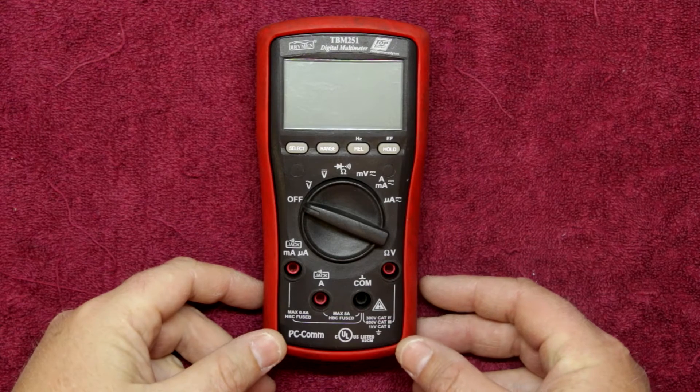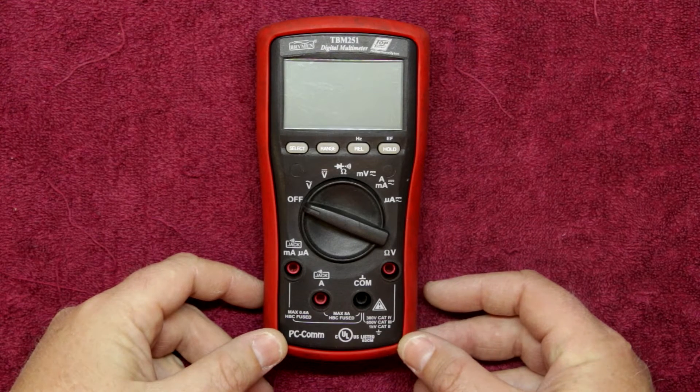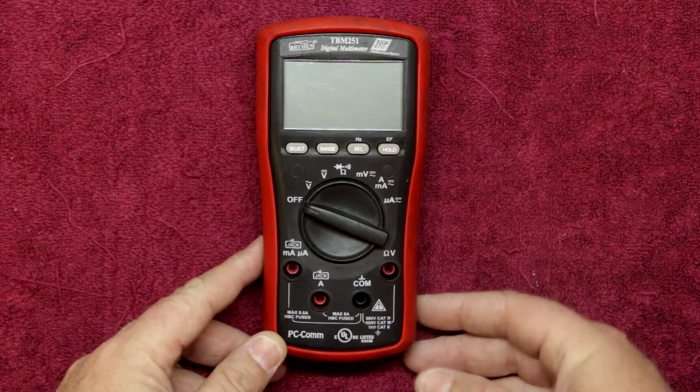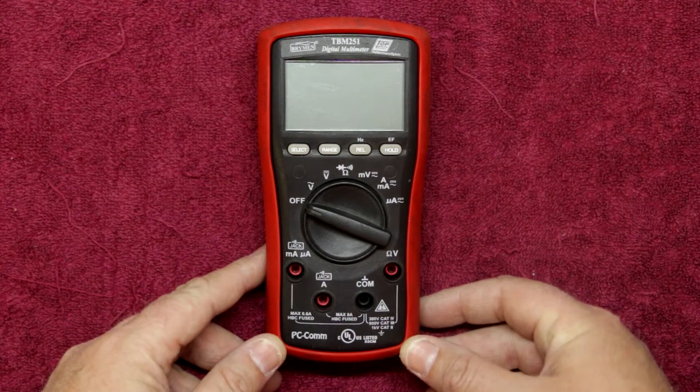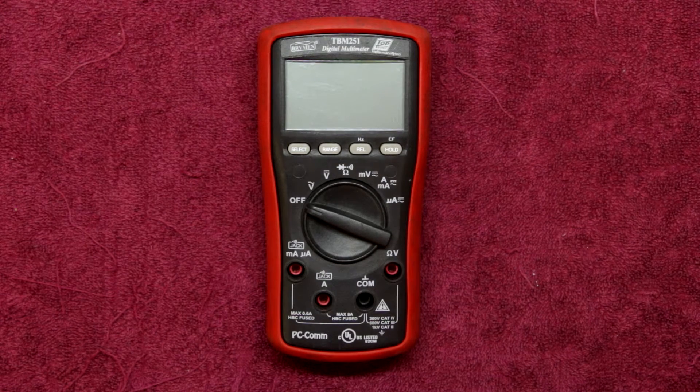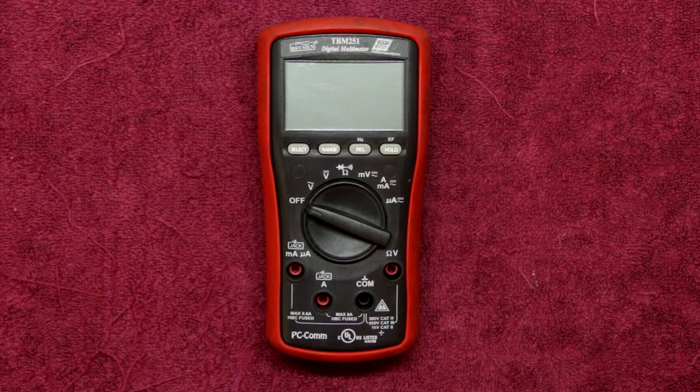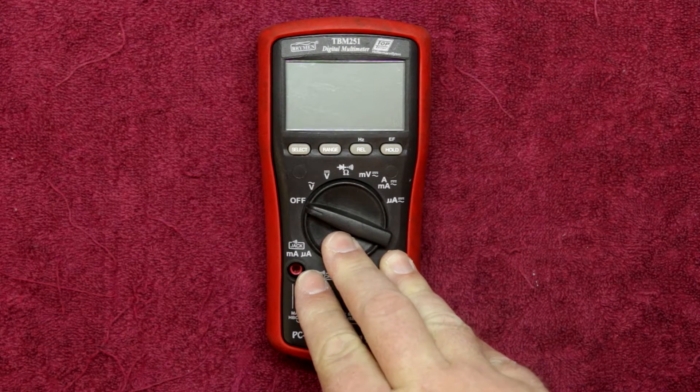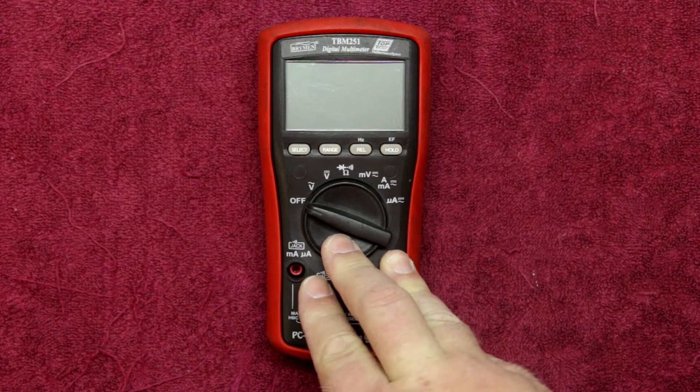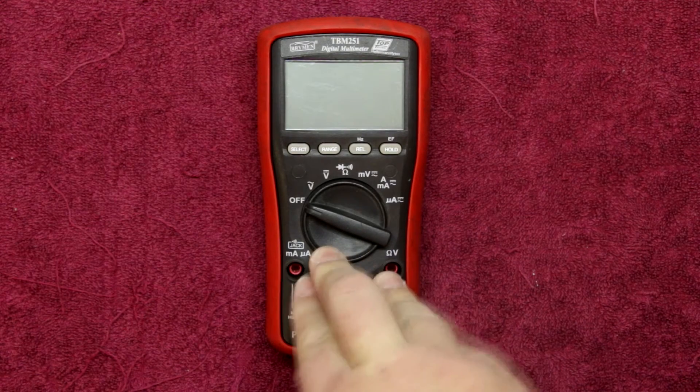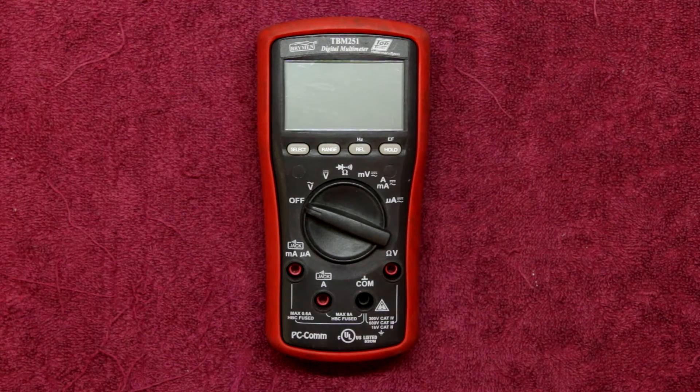So today we're taking a look at the Bremen Toptronic TBM251. These meters are supplied in South Africa by Hellermann Titan, manufactured in Taiwan. This is an older meter that I've had. I picked it up for quite a good price. But what we're going to do now is we're going to compare this little guy against the likes of the TBM812 which is one of the more professional true RMS meters and of course the Fluke 289 and see how it stacks up.